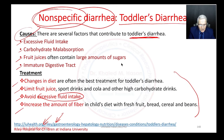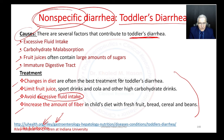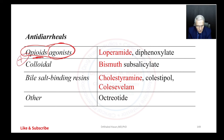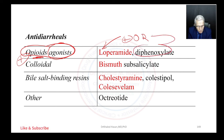Now, what types of treatment are available? The most important medications belong to the opioids — specifically opioid agonists. We use medications that stimulate opioid receptors. Loperamide stimulates opioid receptors, diphenoxylate stimulates opioid receptors, and as we know, opioids cause constipation.